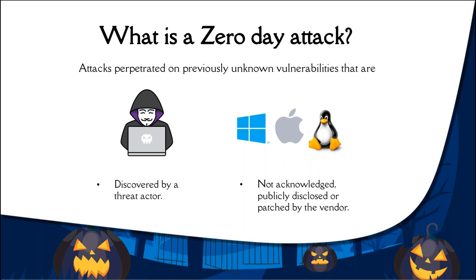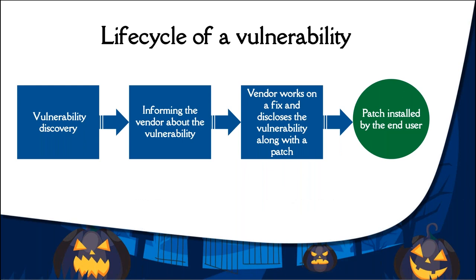To understand zero-day attacks, we need to look at the life cycle of a vulnerability. The life cycle of a normal vulnerability includes: discovery of the vulnerability, reporting it to the relevant vendor, disclosure of the vulnerability and its CVE ID along with security patches released by the vendor, and then the user applies the patch to fix the flaw.